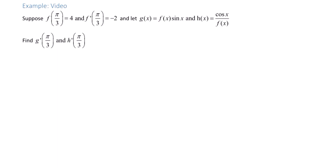Suppose f of π/3 is 4, and f prime of π/3 is negative 2. Let g of x equal f of x times sine of x, and h of x equal cosine x over f of x. Find g prime of π/3 and h prime of π/3.